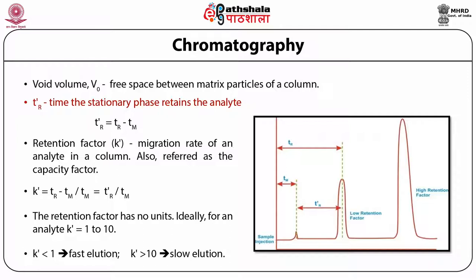The adjusted retention time t'r is the time the stationary phase retains the analyte, represented as: t'r = tr − tm, where tr is retention time and tm is dead time. Another term, the retention factor k', is used to describe the migration rate of an analyte in the column. Also referred to as the capacity factor, it is expressed as: k' = (tr − tm) / tm.